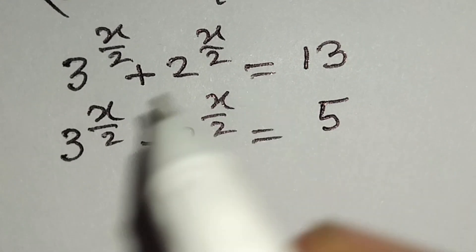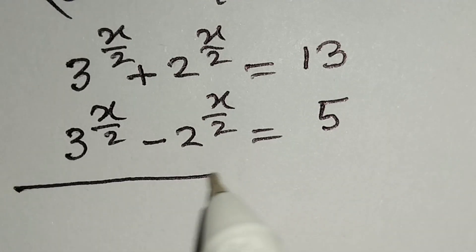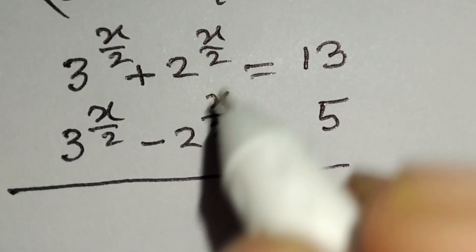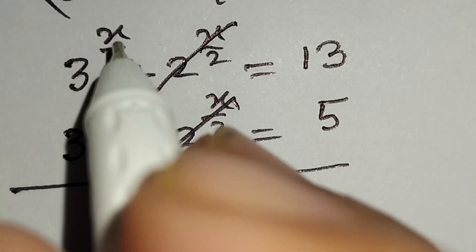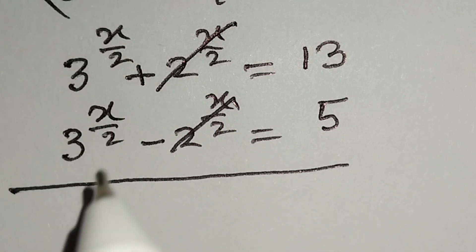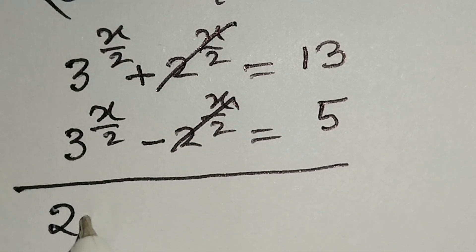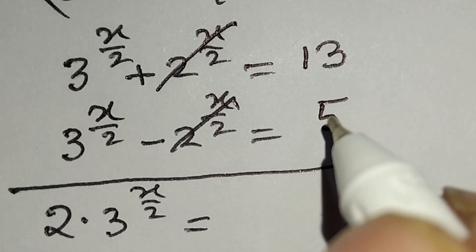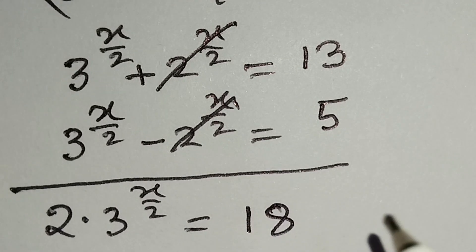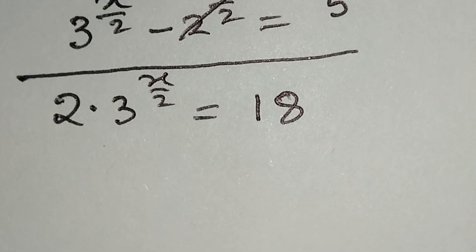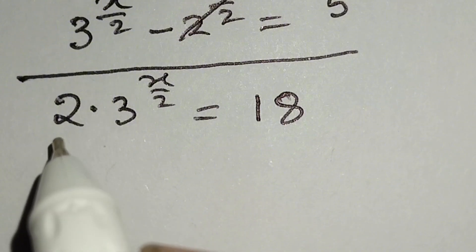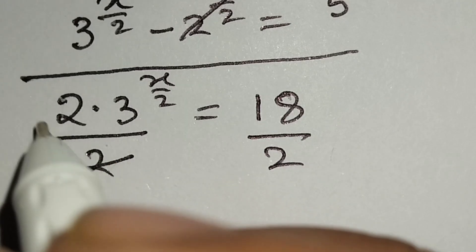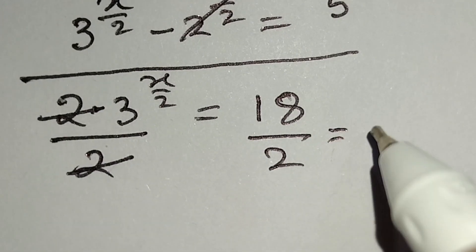Now we will add these two equations. The 2 to the power (x/2) terms cancel. We get 2 times 3 to the power (x/2) is equal to 13 plus 5, which equals 18. Dividing both sides by 2, 18 over 2 equals 9, so 3 to the power (x/2) is equal to 9.